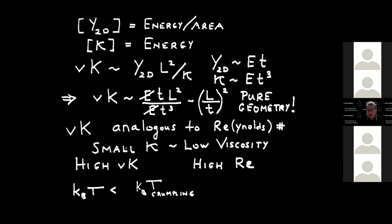This number is controlled by pure geometry. A high value corresponds to a turbulent, low-viscosity, high Reynolds number system, and a low value to a damped system. Very thin systems are going to have a high von Kármán number purely in terms of geometry.